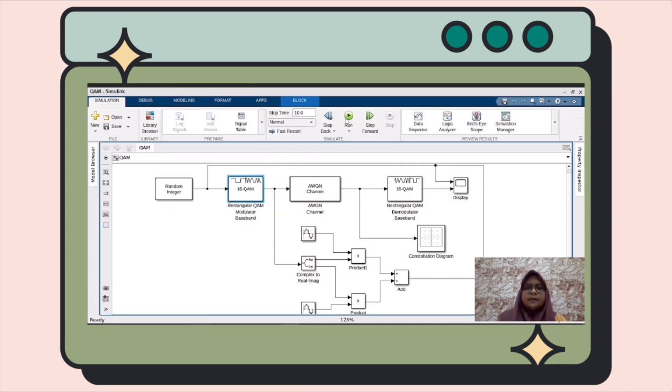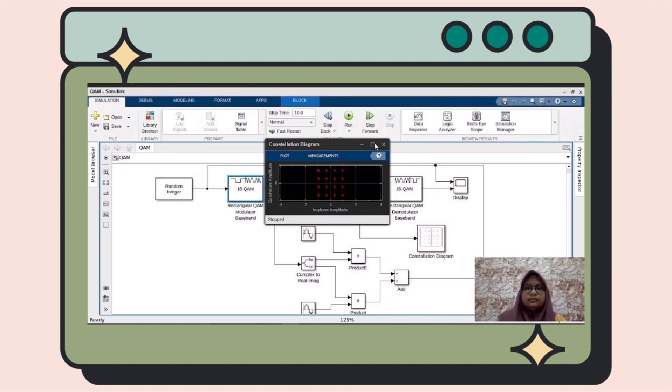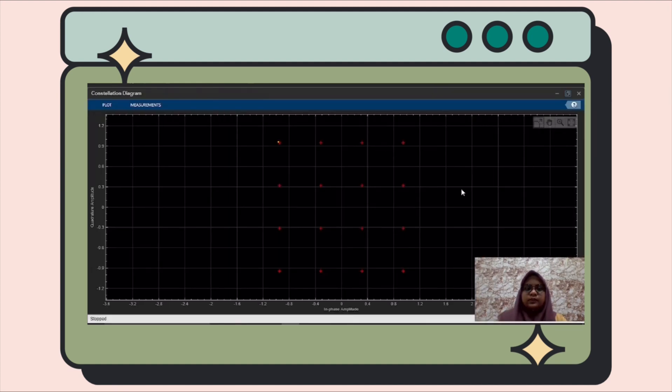When I run all the circuit, the constellation, this is the output of the constellation. The points are usually in a square grid, also in a hexagon or triangle grid. As the QAM order increases, the distance between the different points on the constellation diagram decreases, and there is a higher possibility of data errors being introduced.